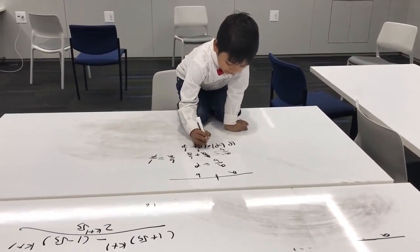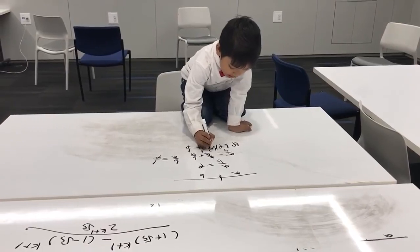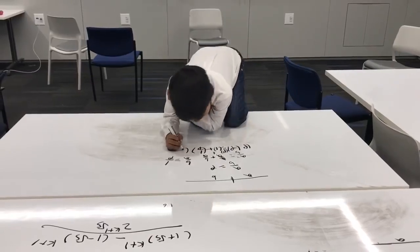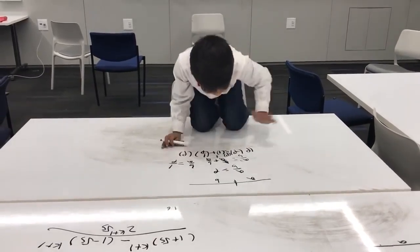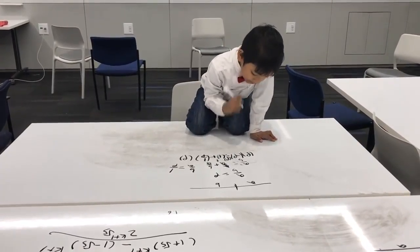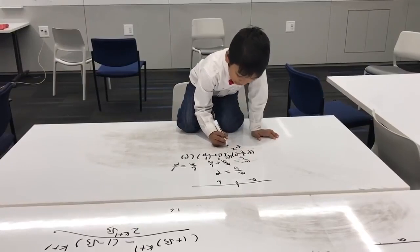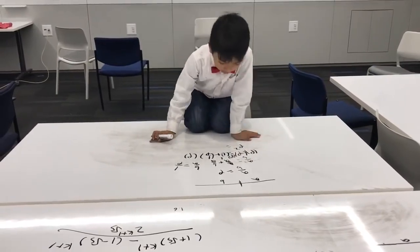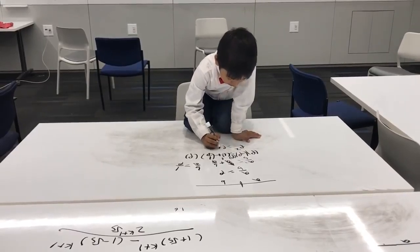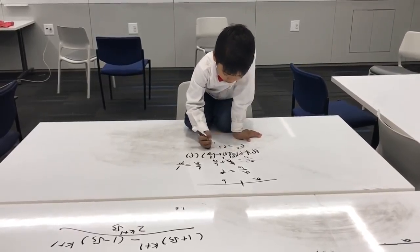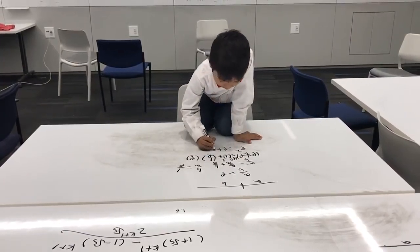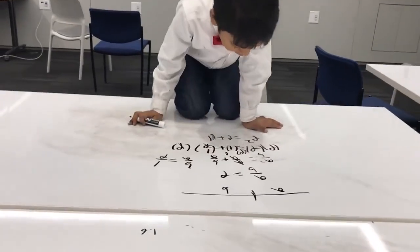This is gonna be ridiculous. So phi times phi equals phi squared, equals 1 times phi, equals phi, plus... phi, phi cancel. So phi squared equals phi plus 1.